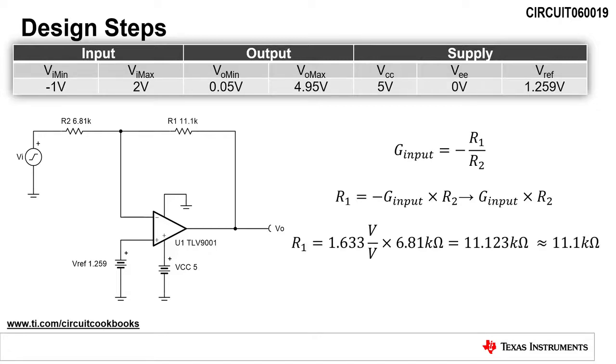The next step is to calculate resistors R1 and R2 to set the gain calculated in the previous slide. The gain applied to the input signal is -R1/R2. To set the gain equal to -1.633 V/V, we will select resistor R2 as 6.81kΩ and then calculate R1, which is equal to G_input times R2.